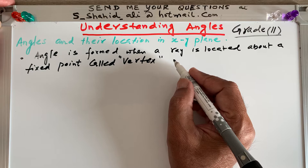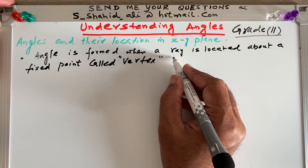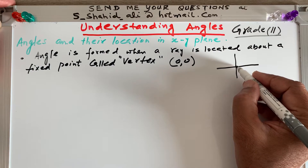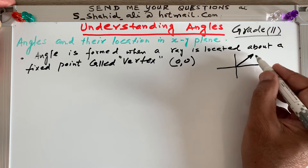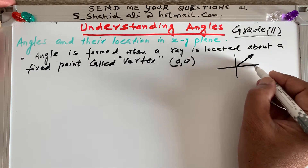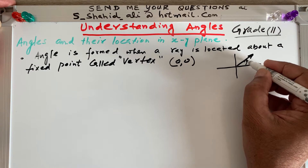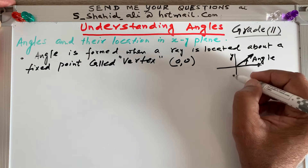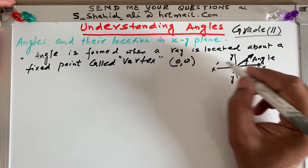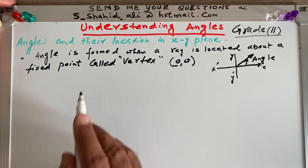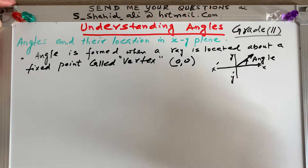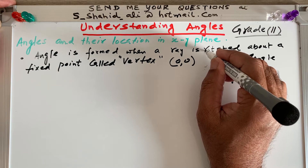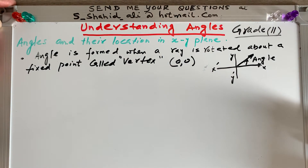In the XY plane, we take that fixed point as (0, 0). So if we have (0, 0) here as the vertex, and a ray is rotating — it was originally here and then it rotates to here — an angle is formed. That is the definition of how an angle is formed. Note: a ray is rotated, not located, about a fixed point called vertex.